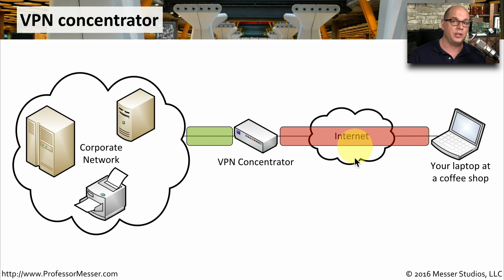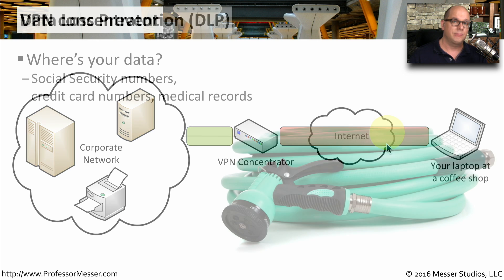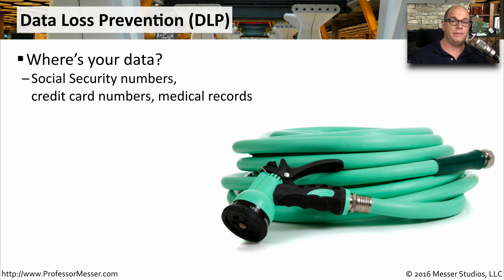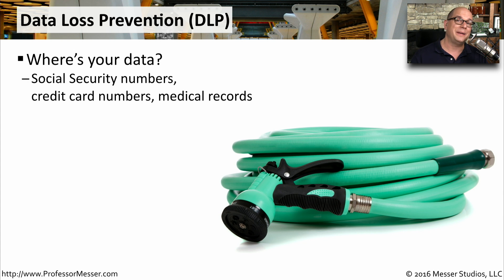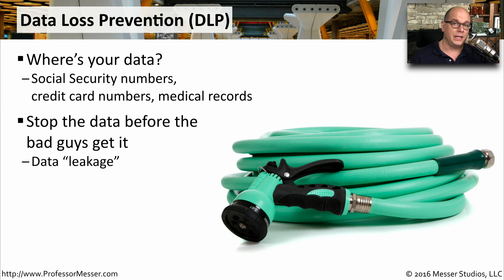The obvious benefit is that everything going across the internet from the coffee shop to the VPN concentrator is encrypted. If anybody gains access to the communication flow between these two devices, they won't be able to know what is inside. All of that data is secure and encrypted. The type of data we send in and out of our network can be very sensitive — it might include social security numbers, credit card numbers, medical information, or other sensitive data. When this type of information is communicated over the network, it is almost always sent in encrypted form. If somebody is sending this information in the clear, whether accidentally or on purpose, you can be notified through devices that provide data loss prevention, or DLP.